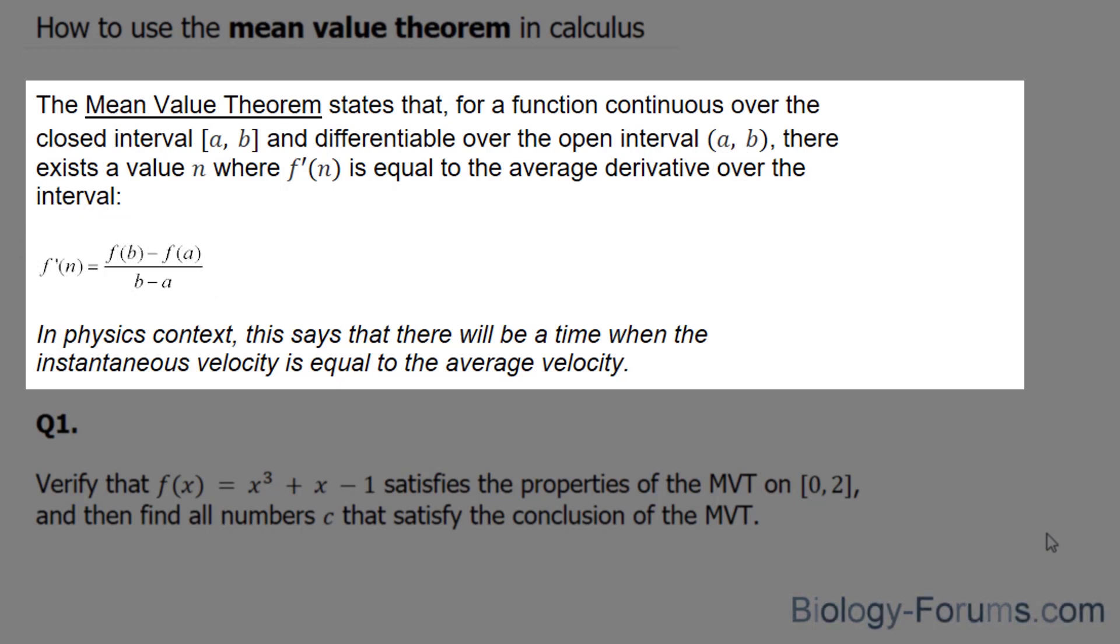Defined here. In physics context, this says that there will be a time when the instantaneous velocity, for example, is equal to the average velocity.